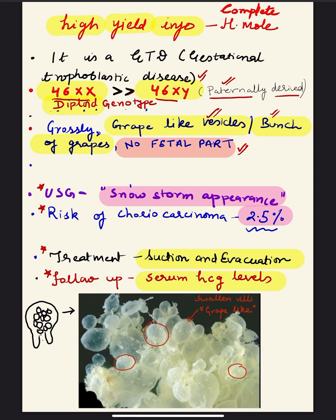There is no formation of embryo and no fetal part — this is an important gross finding. On ultrasound, there is a snowstorm appearance, which is important for MCQs and vivas. The risk of development of choriocarcinoma is about 2.5%. Treatment involves suction and evacuation, and follow-up is done by serum HCG levels, which are very much elevated in hydatidiform mole. A detailed lecture link will be added in the description.